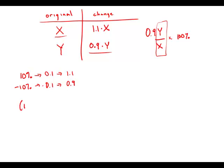Statement number one tells us the increased price per share of stock X was equal to the original price per share of stock Y. So 1.1X equals Y. Well, right there we divide both sides by X and we get 1.1 equals Y over X. We have the ratio of Y over X, so now we can solve. This statement by itself is sufficient.